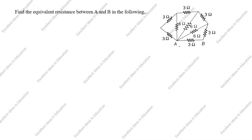We need to find the equivalent resistance. Here we will label the nodes as A, B, C, D, E. From A to C this is series, so we take A-C: 3 ohm plus 3 ohm equals 6 ohm. Now we will redraw the circuit.